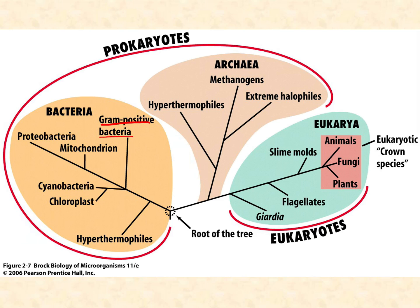And if you look at the domain bacteria, you notice that the gram-positive bacteria get their own branch. In fact, there are a couple of branches that hold the gram-positives. One branch is called the firmicutes, which means thick or tough skin. That's where we find most of the pathogens that are gram-positive — your staphylococci, your streptococci, clostridium, etc. There is another branch called the actinobacteria, and there are some pathogens in there, but fewer.